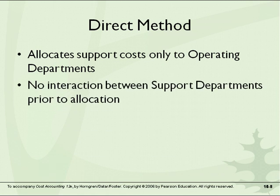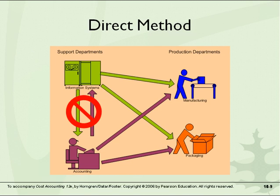There's no interaction between one support department prior to the allocation. Looking at the graphic, we have the information systems department in the top left and accounting in the bottom left. There's no allocation of the cost of the information department to accounting, which also uses it — we ignore that. We simply take the cost of information and apply it to the line or production departments, and then take the accounting cost and do the same. Under the direct method, we simply ignore any cross-usage between support departments, which is why we see that big 'no' stamp on the left side of the graphic.